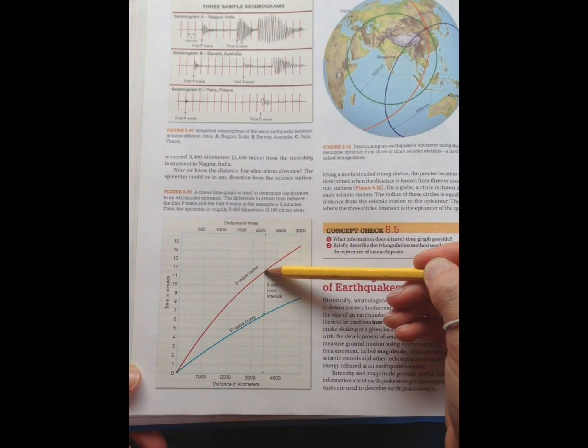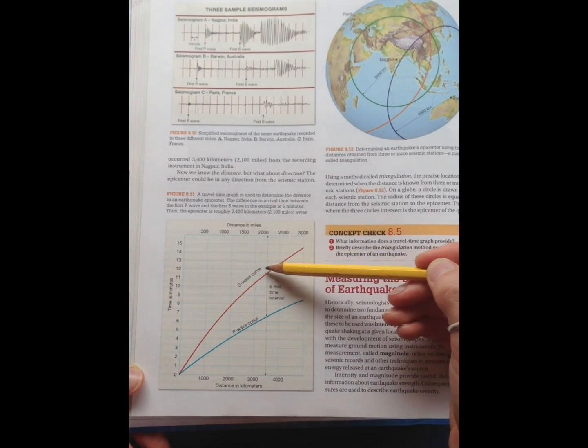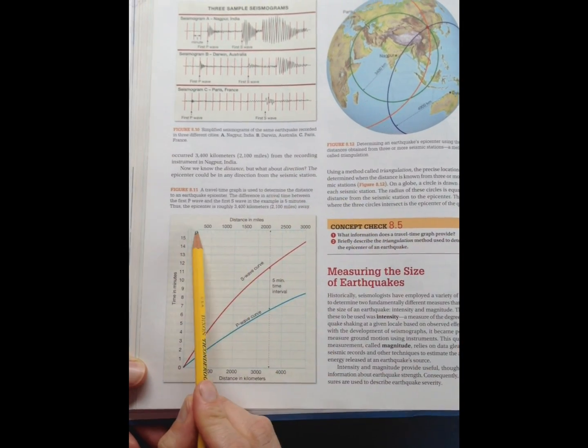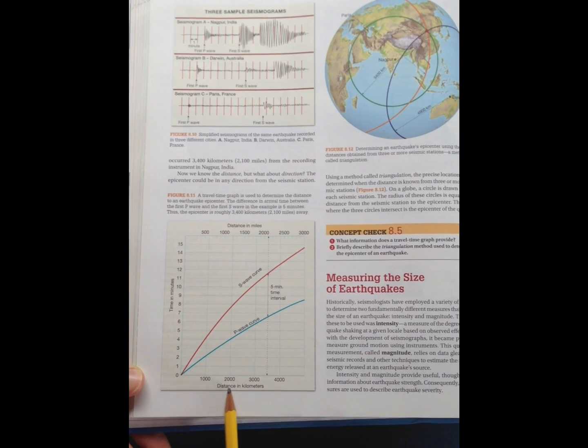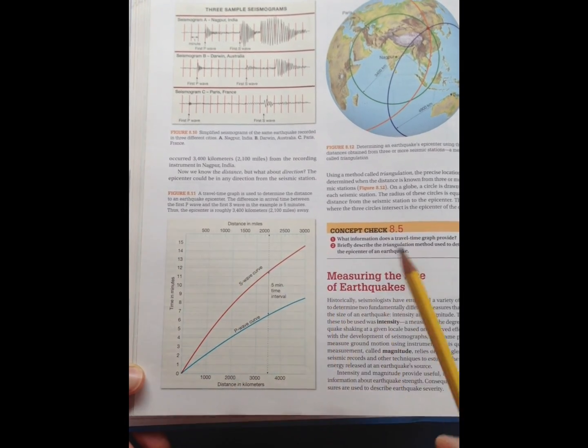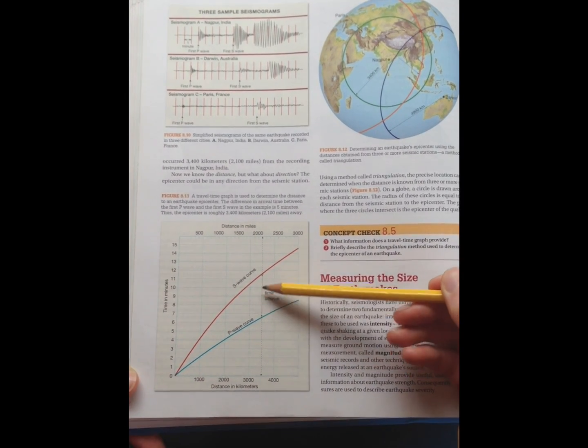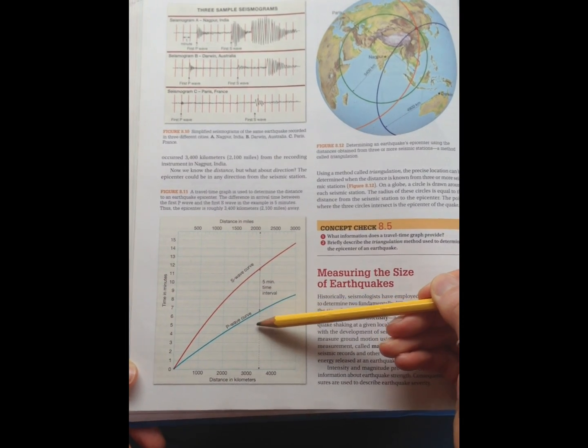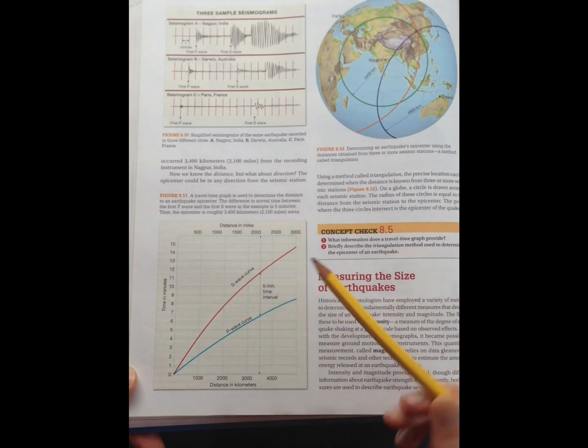Okay, so then we want to figure out how far away the epicenter was. So now you need to just go down to the bottom here or the top. On your X-axis will give you the distance from your location in either kilometers or miles. So we'll go ahead down here in kilometers. So with a five minute interval between S-wave and P-wave, just draw your line down.